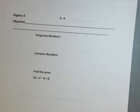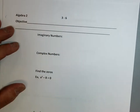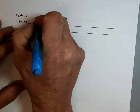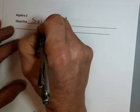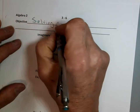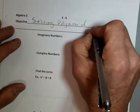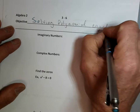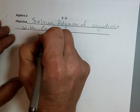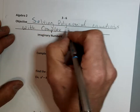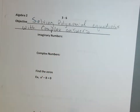Today we're going to talk about solving polynomial equations with complex answers. Complex answers — complex numbers have i's in them.